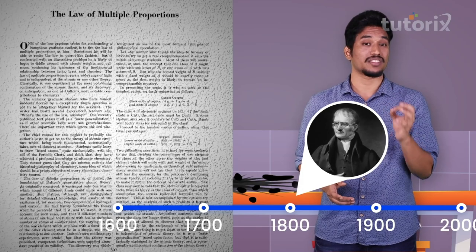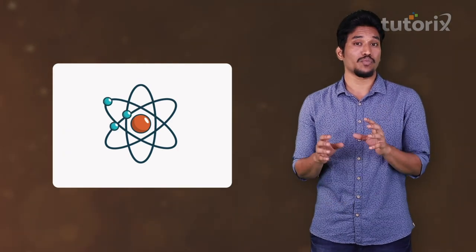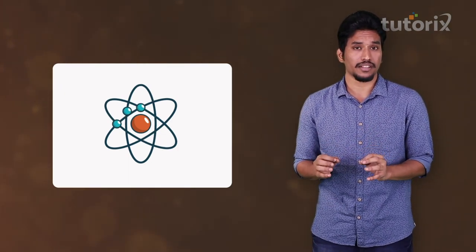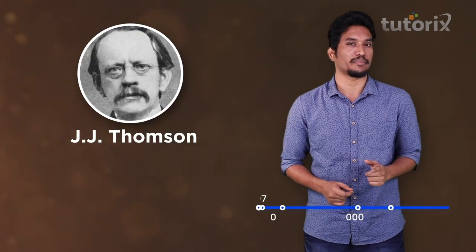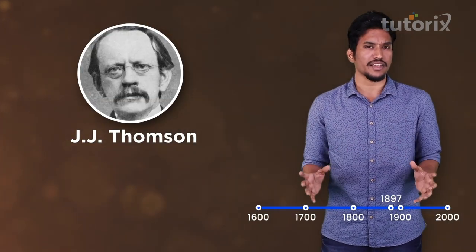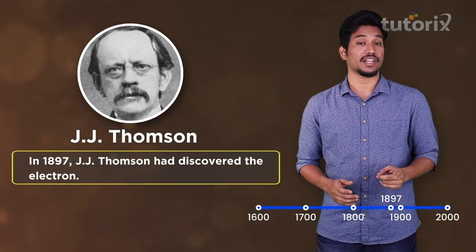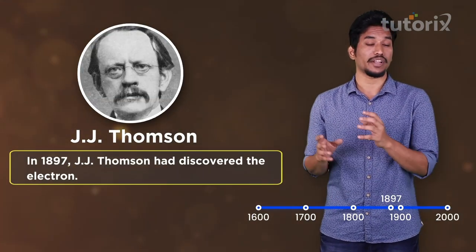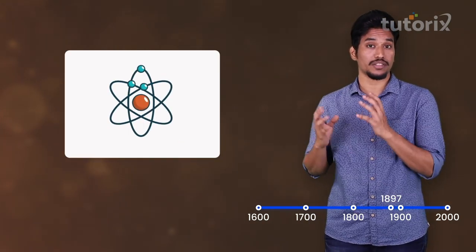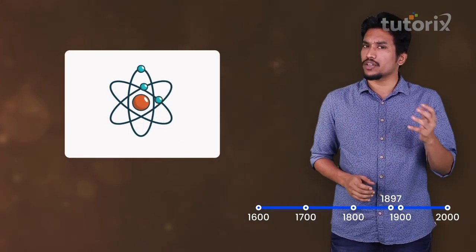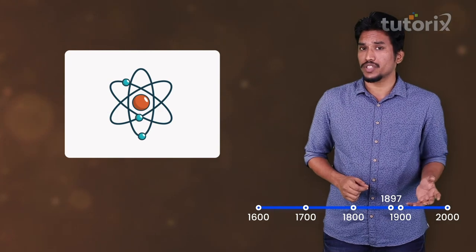Up to this point, everyone believed that the atom was the last indivisible thing. But that changed in 1897, because in this year J.J. Thomson discovered the electron inside an atom, which made him believe that an atom was divisible. Because the electron carried a negative charge, he proposed the watermelon model.